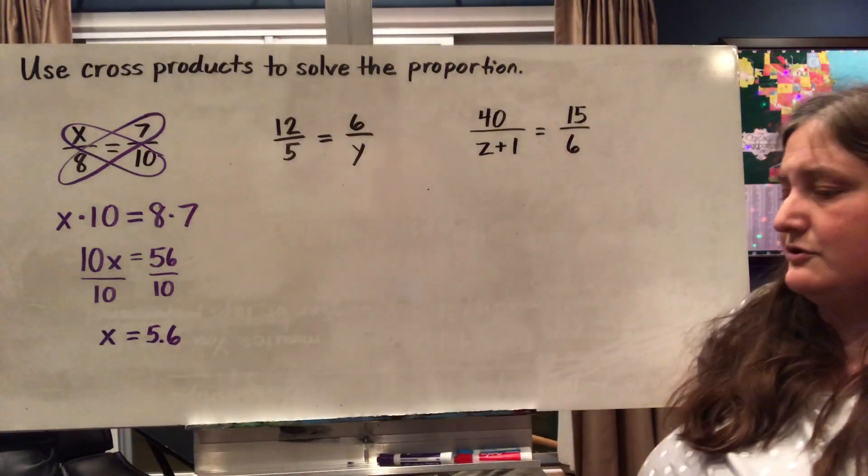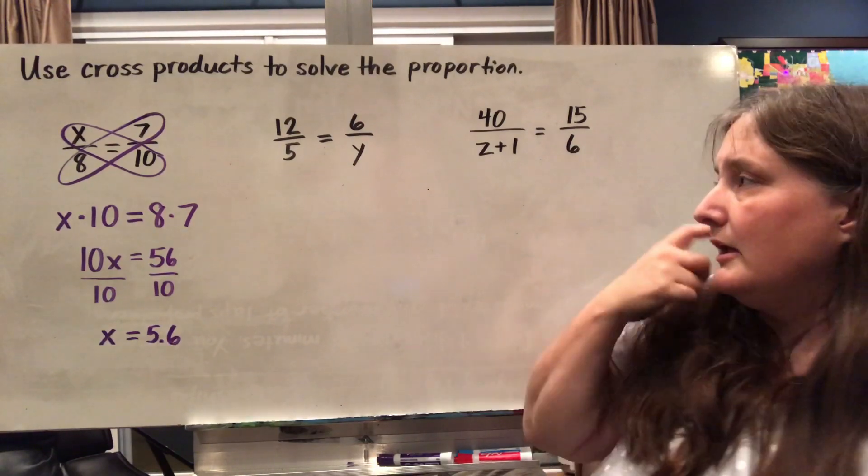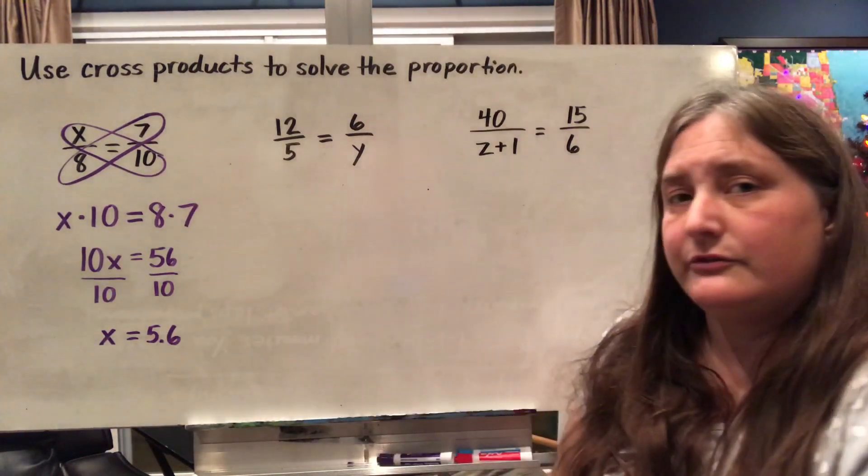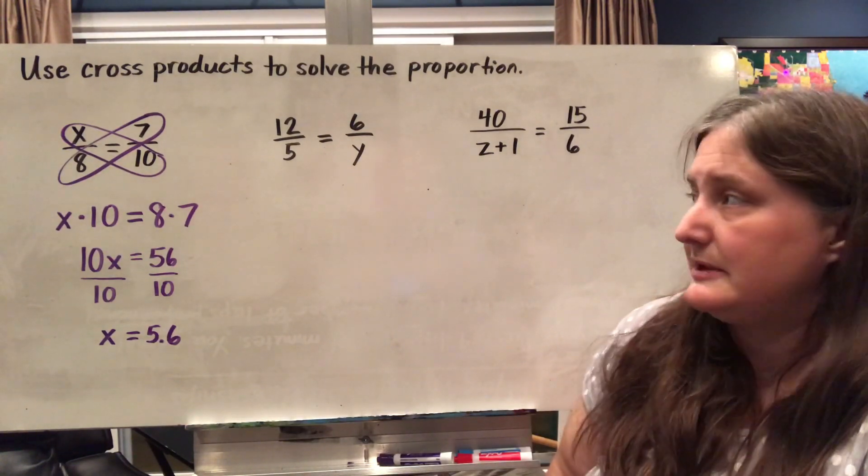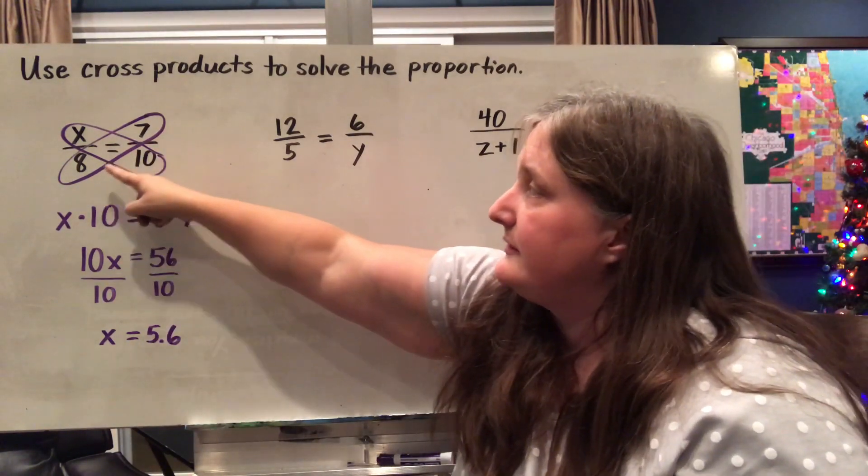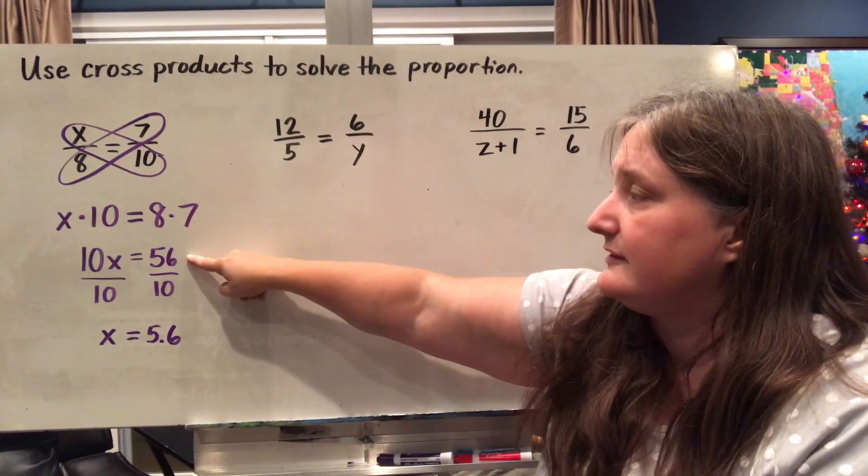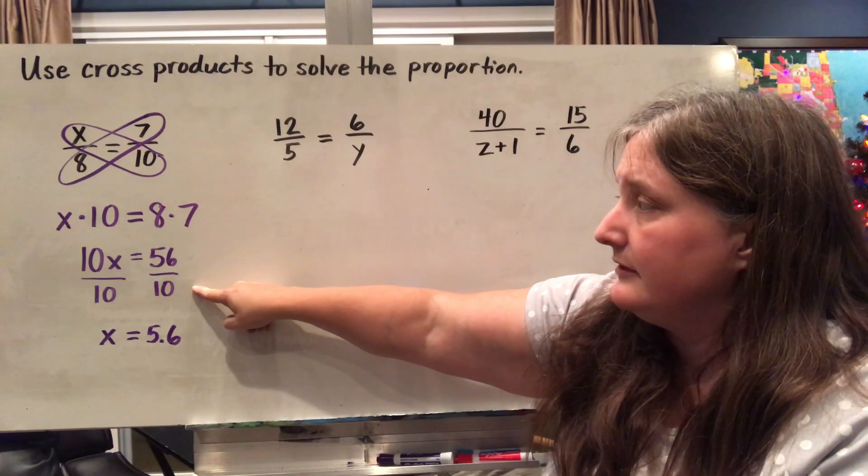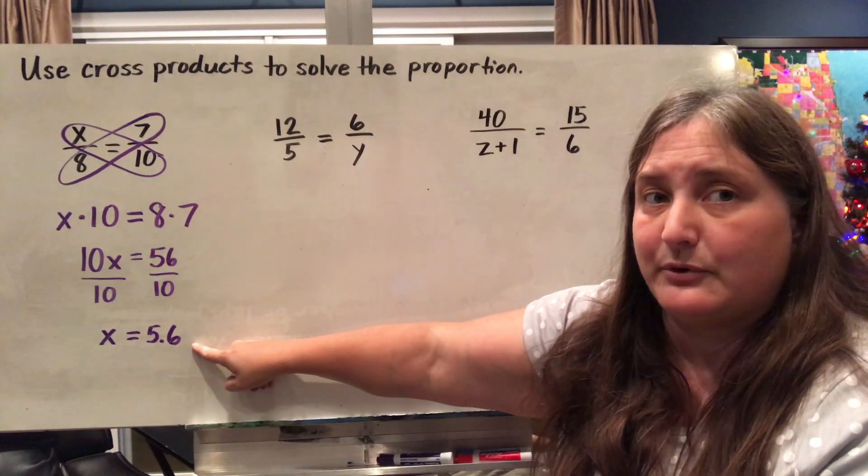All right, let's look at solving a few using our cross products property. So here we had x over 8 equals 7/10. So I'm going to multiply my cross products. And in a proportion, my cross products should be equal. So I had x times 10 going this way and 8 times 7 going this way, which I can simplify to 10x equals 56. Now to solve for x, I'm going to divide each side by 10. And 56 divided by 10 leaves me with x equals 5.6.